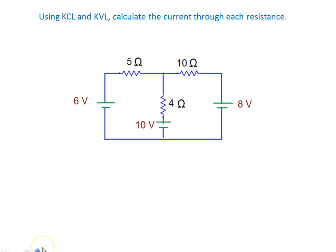Now you have to use both KCL and KVL to calculate the current through each resistance in the next circuit. Solve it yourself.